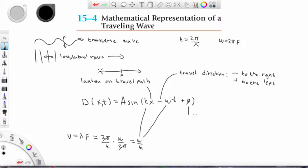As well, the phase angle phi shifts the curve to the right if it's negative and to the left if it's positive.